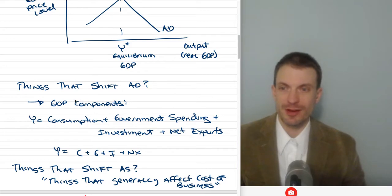Things that shift aggregate demand are basically the GDP components. GDP is comprised of consumption, government spending, investment, and net exports, or C plus G plus I plus NX. Anything that would change consumption, government spending, investment, or net exports would shift aggregate demand left or right.